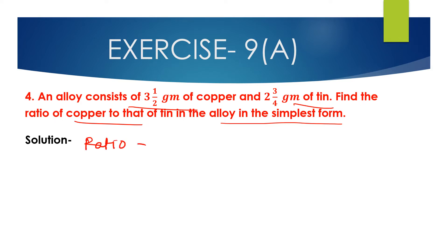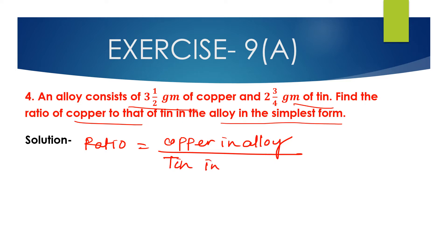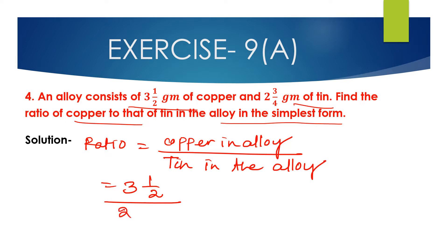So the ratio of copper to tin in the alloy is 3.5 grams divided by 2 and 3/4 grams. We convert 3.5 to the fraction 7/2. Then 3 multiplied by 2 is 6, and 6 plus 1 is 7, divided by 2.